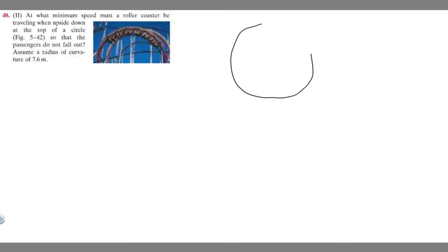Let's go ahead and draw what's going on here. Imagine this is going to be our circle. This is going to be our passengers up here. Here's the roller coaster itself. So these are our passengers. We know the radius of this circle, which is this distance right here, is going to be 7.6 meters.